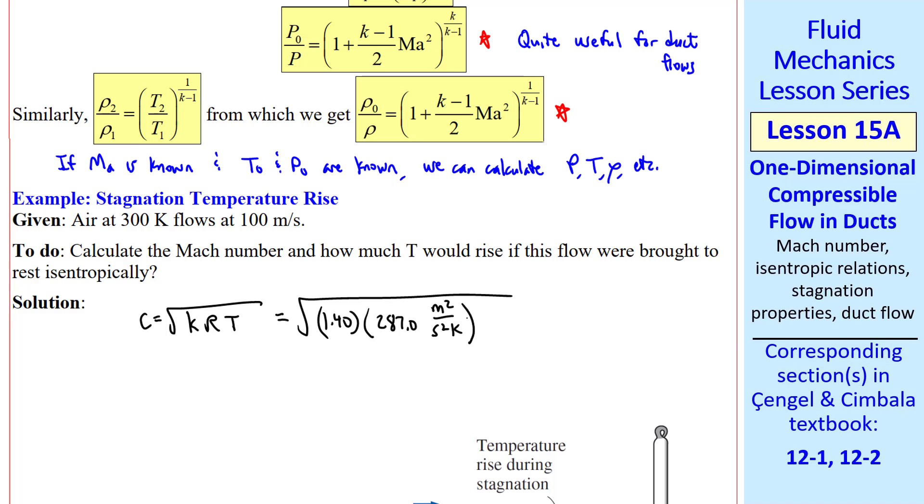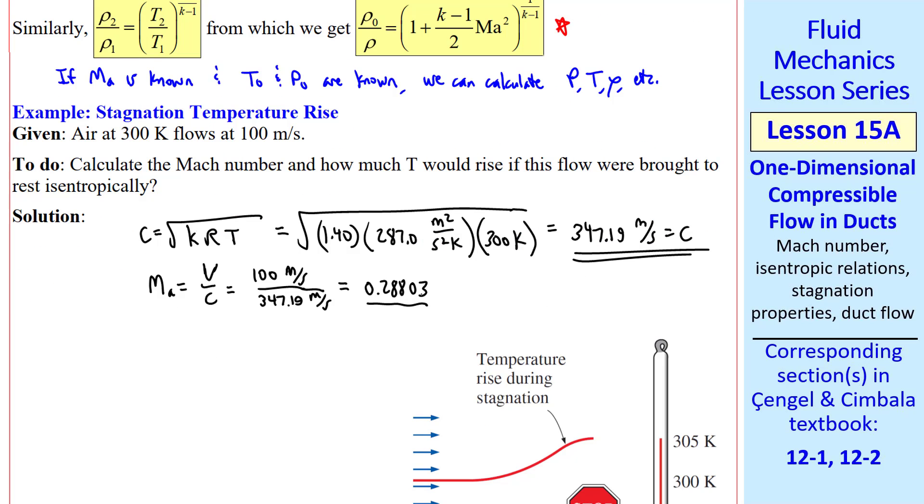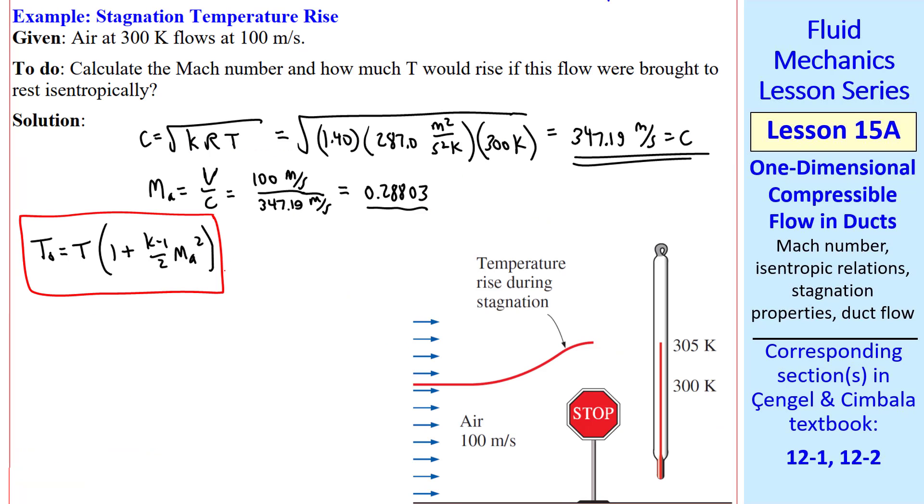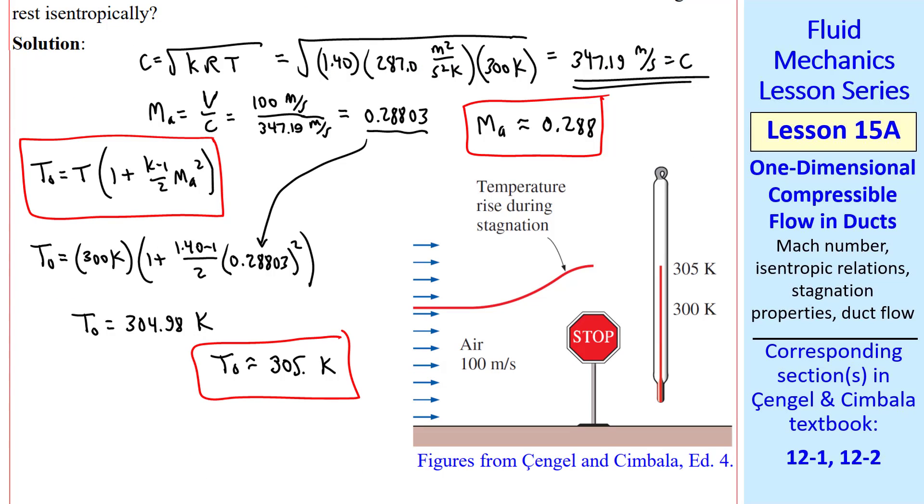I start by calculating the speed of sound, which is the square root of k times the specific gas constant for air times T. I get about 347 meters per second. The Mach number is thus V over C, which is 0.28803, just below the incompressible limit. From this equation we solve for T0 by multiplying the right hand side by T. Plugging in the numbers including the Mach number, we get T0 is 304.98K. To three significant digits, T0 is 305K and Ma is 0.288. So compared to our initial 300K, delta T is about 5 degrees. If this air is slowed down isentropically, the temperature rises from about 300 to 305K.